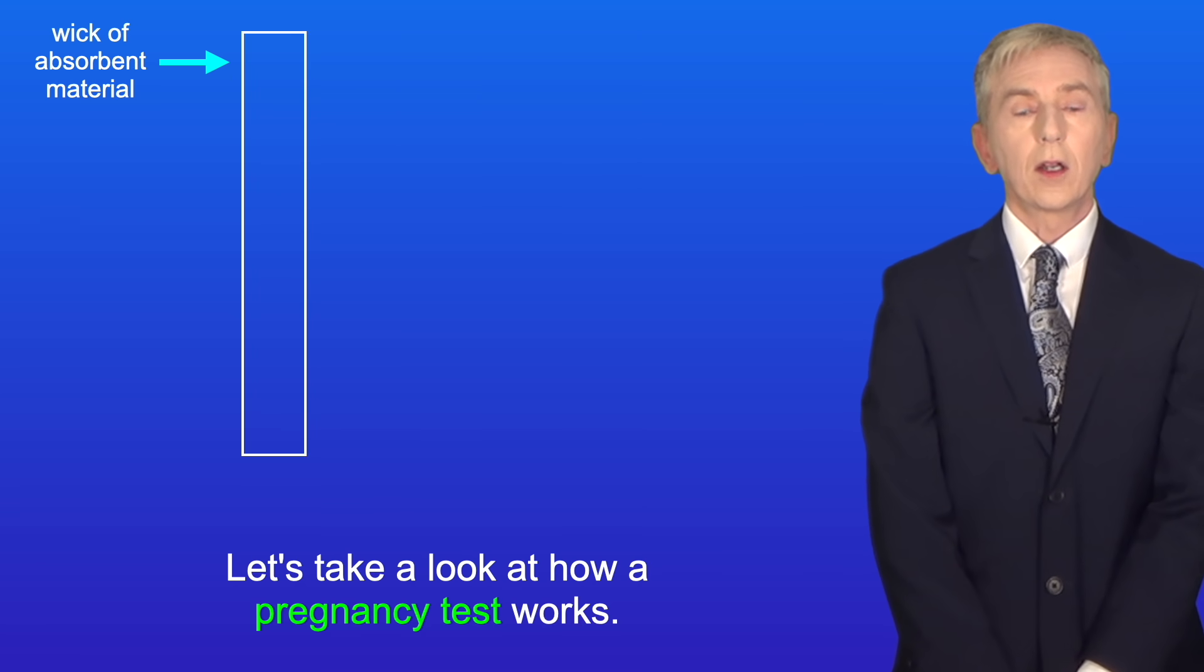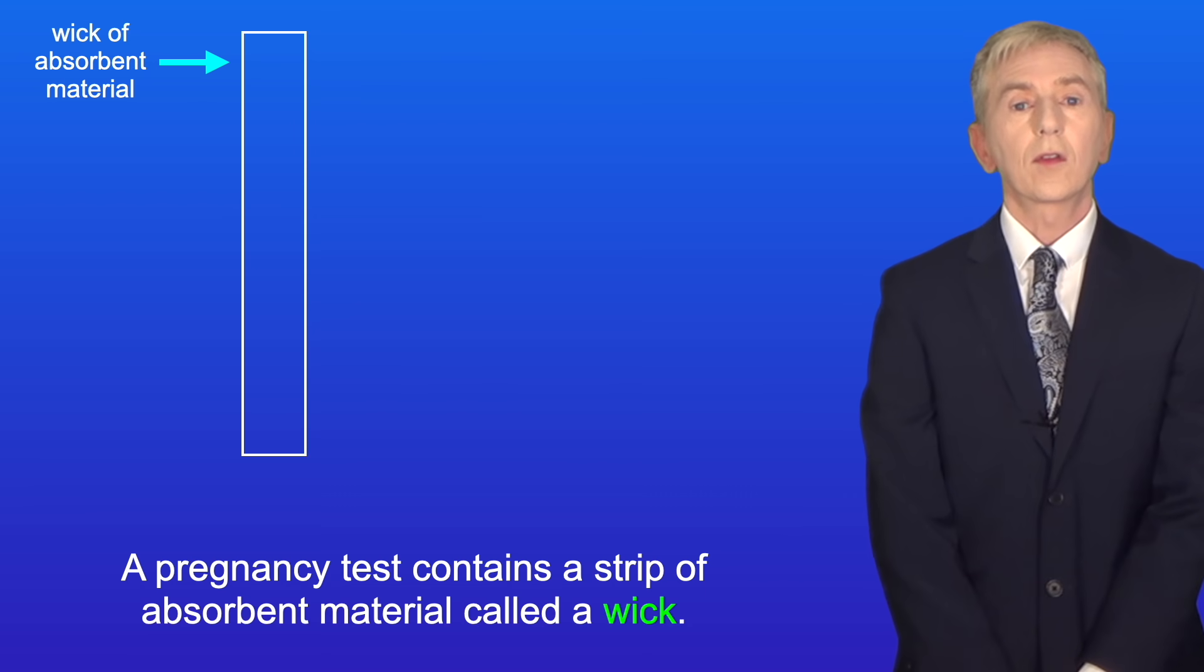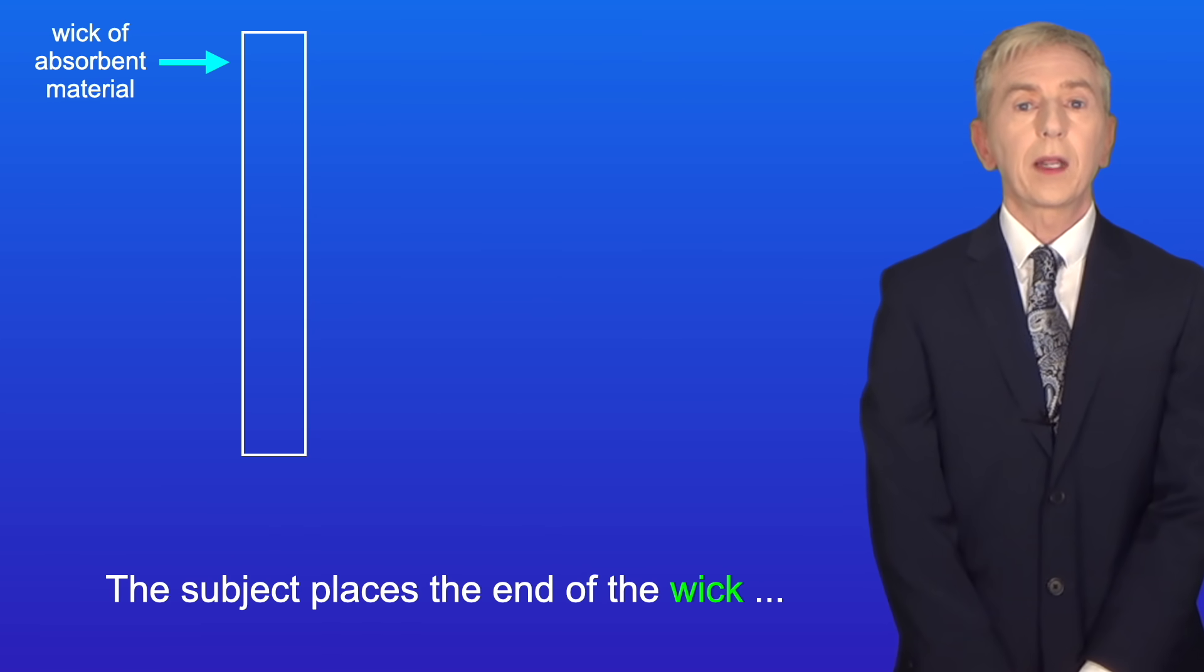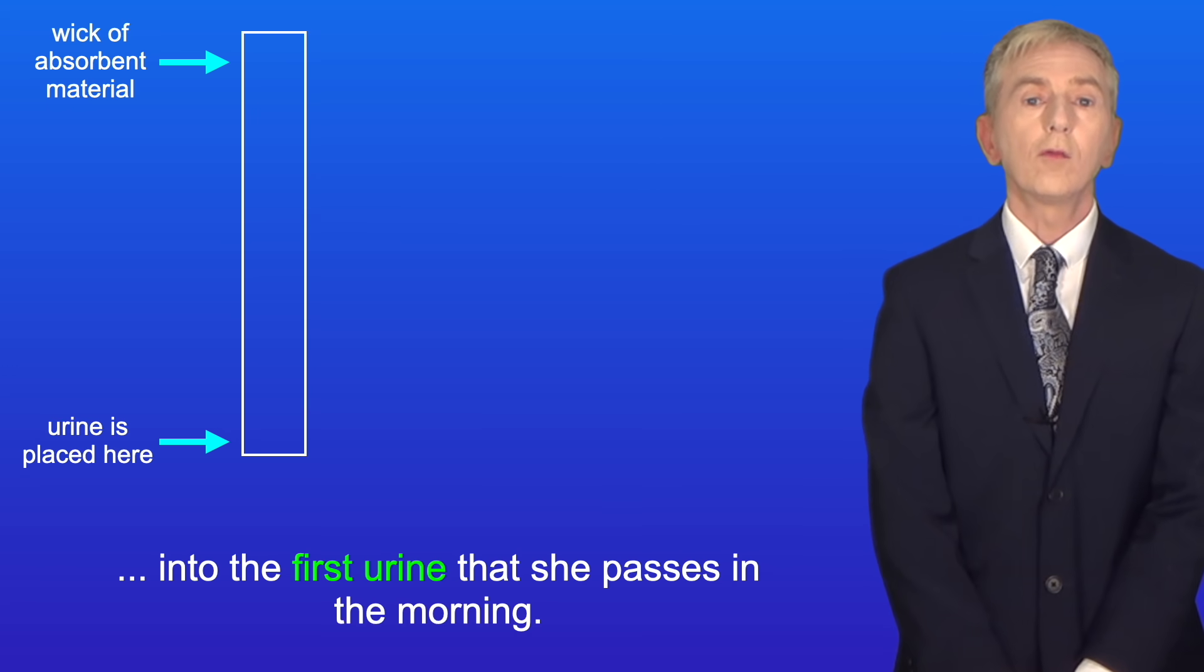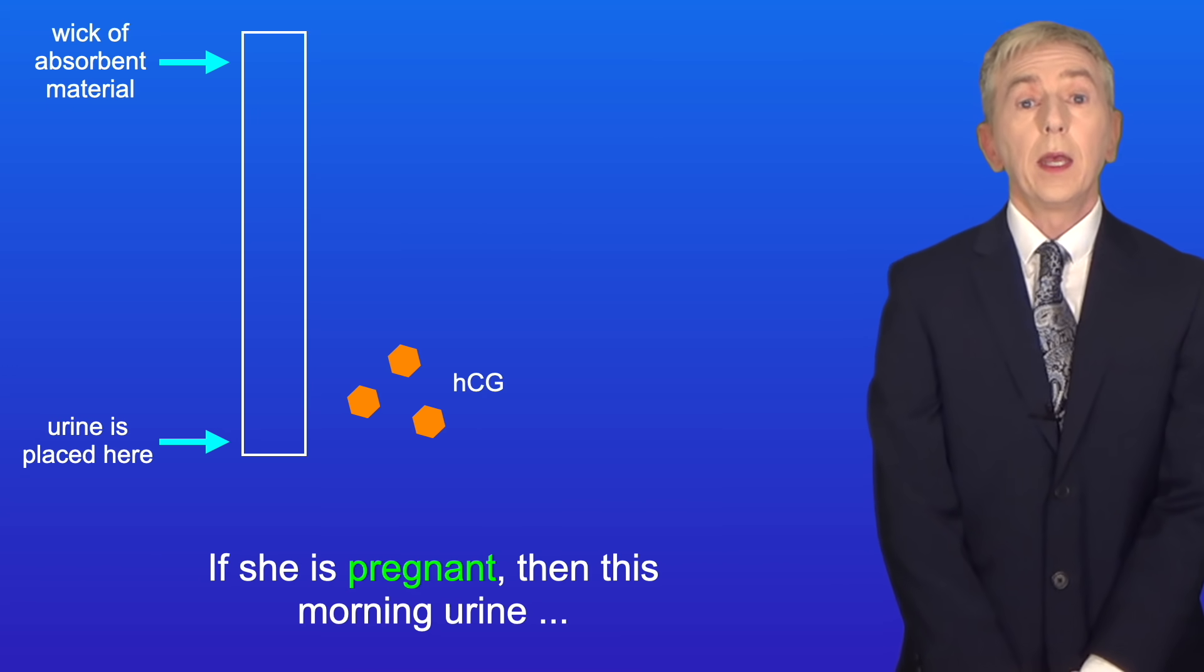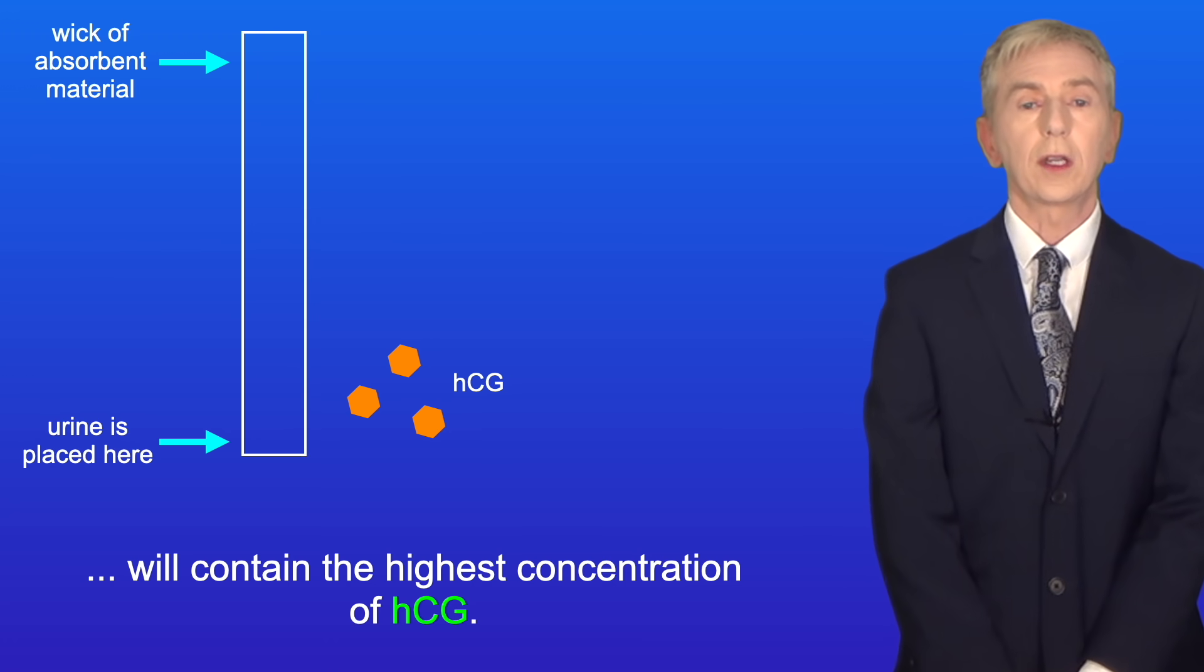So let's take a look at how a pregnancy test works. A pregnancy test contains a strip of absorbent material called a wick. The subject places the end of the wick into the first urine that she passes in the morning. If she's pregnant, then this morning urine will contain the highest concentration of HCG.